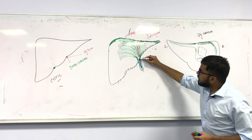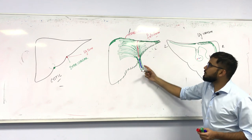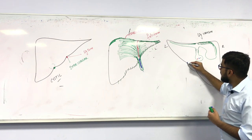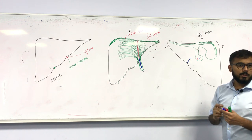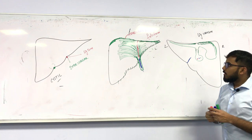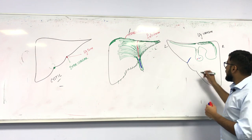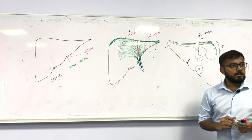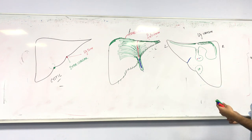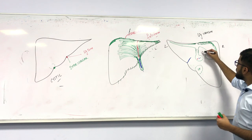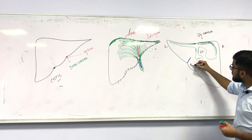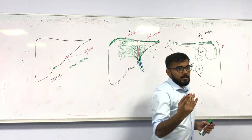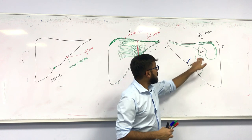The ligamentum teres, which was on the front, passes up and around to the back. The gallbladder is located at the cystic notch on the posterior side. On the posterior surface, there are also two important additional lobes: the caudate lobe and the quadrate lobe.